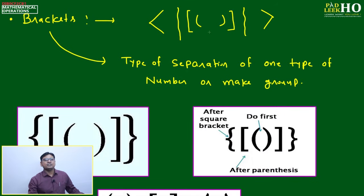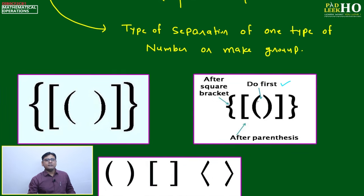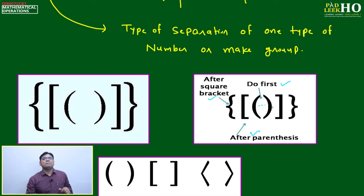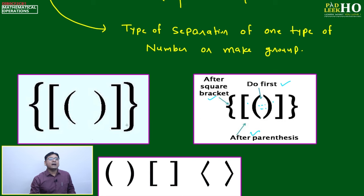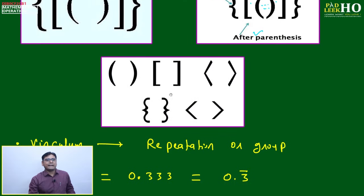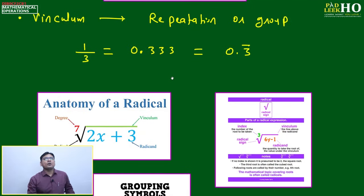For all types of brackets — parenthesis, square brackets, and braces — the order always goes from inner to outer. First do parenthesis, then square brackets, then braces. For example, if something is written inside parentheses like 3×5, you start with the innermost bracket. So: parenthesis first, then square bracket, then braces. That is the general expression for all types of brackets.